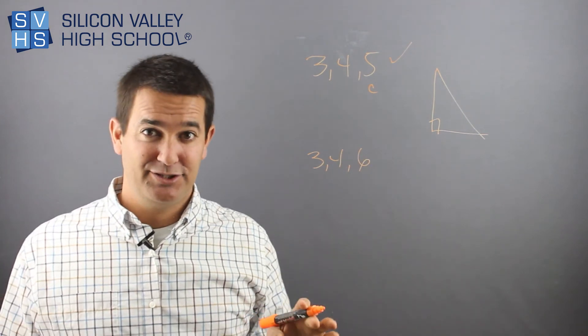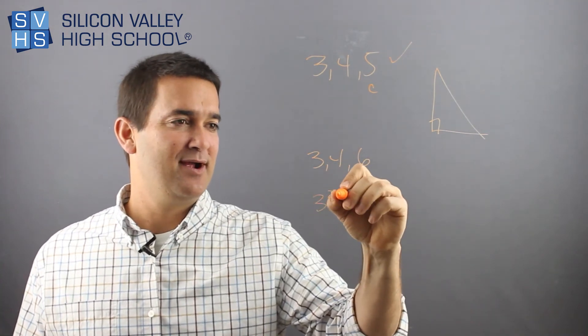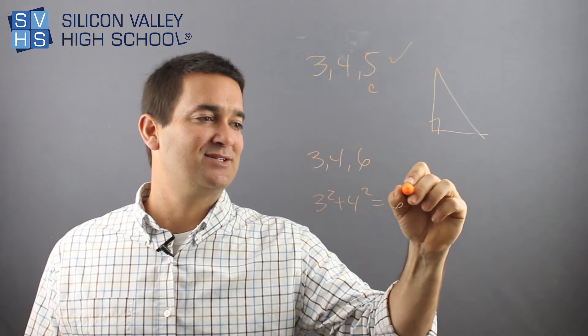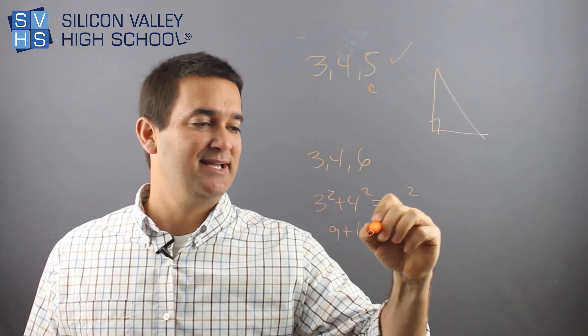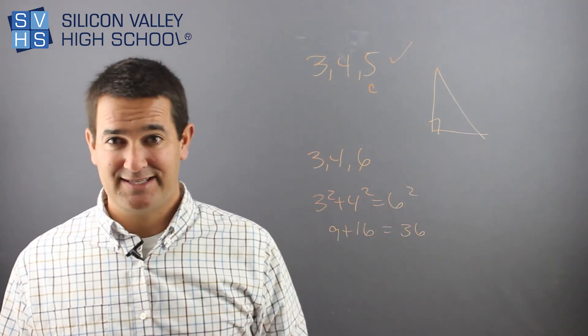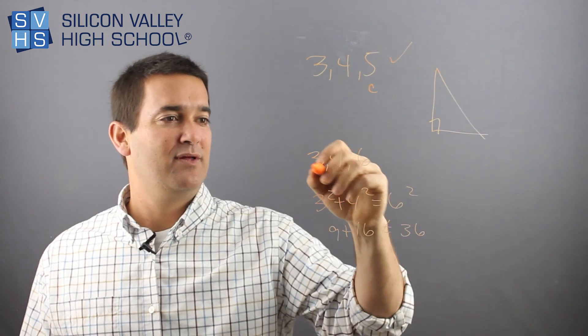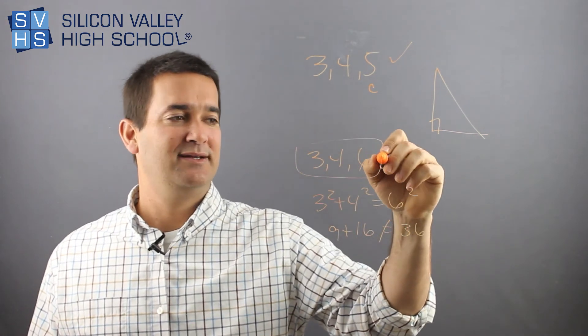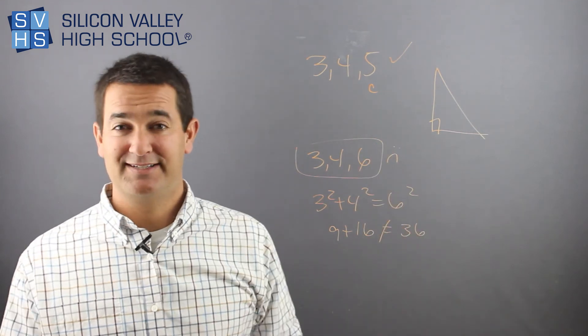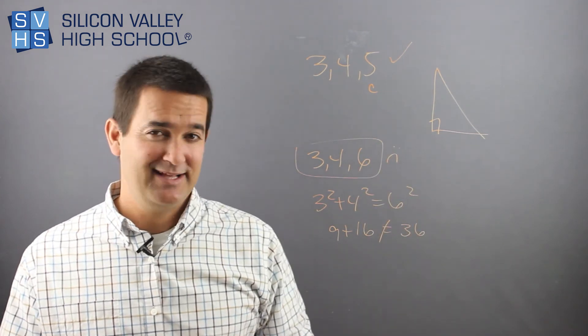You know, I'm not sure. Okay, let's do it. Three squared plus four squared equals six squared. Nine plus 16 equals 36. I can already tell that's not true. They do not equal. Therefore, these are not, I'll make a frowny face, not the lengths of a right triangle. And that's it.